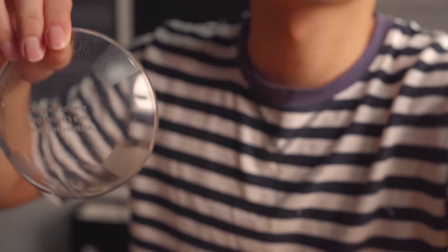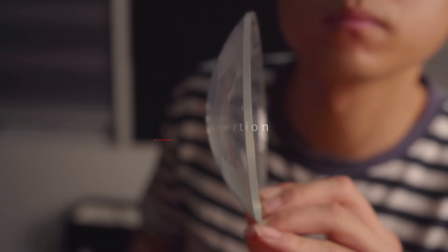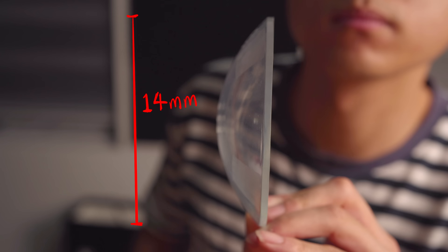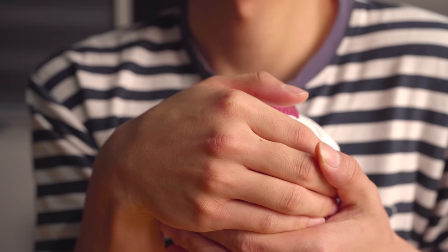Once we have inspected the lens, it's time to insert the lens into the eyeball. Step three, insertion. Contact lenses are usually about 14 millimeters in diameter, which means that for the lens to comfortably land on the eyeball, we will need to expand our eyelids wider than the lens itself.